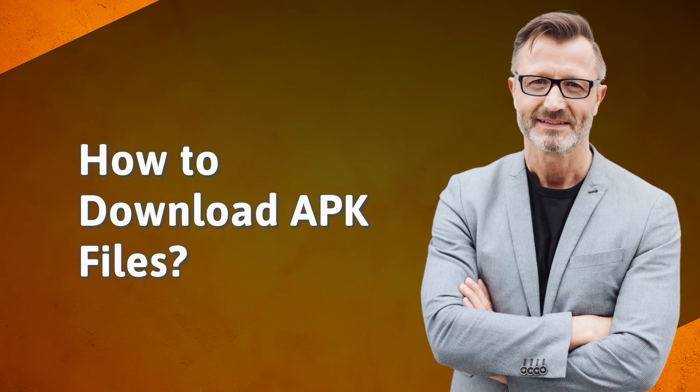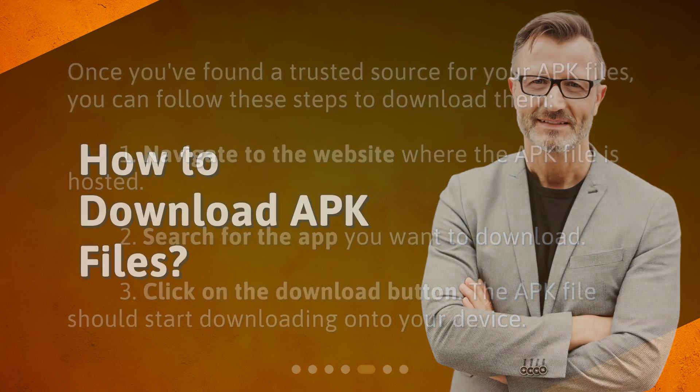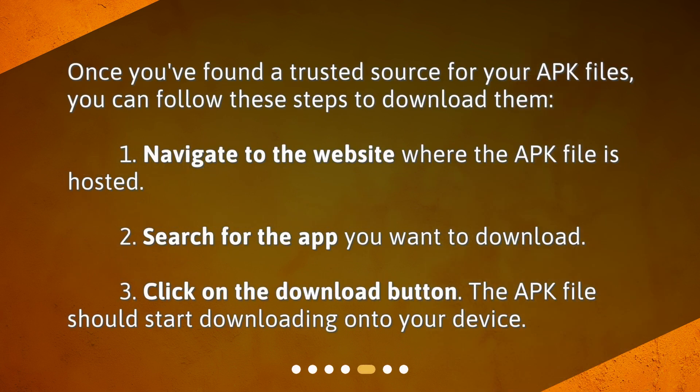How to download APK files? Once you've found a trusted source for your APK files, you can follow these steps to download them. One: navigate to the website where the APK file is hosted. Two: search for the app you want to download. Three: click on the download button. The APK file should then start downloading onto your device.